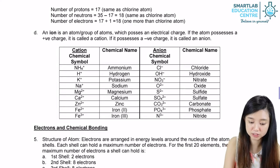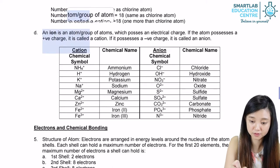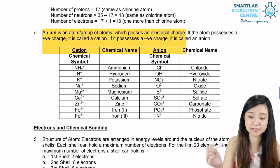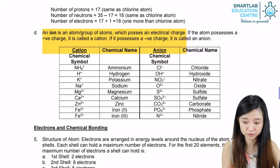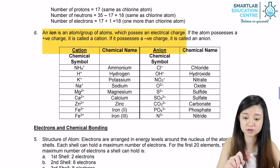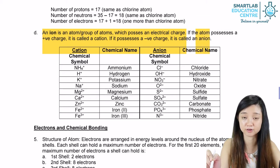An ion is actually a group of atoms or an atom which possesses an electrical charge. If it has a positive charge, it's called a cation. And if it has a negative charge, it's going to be called an anion.